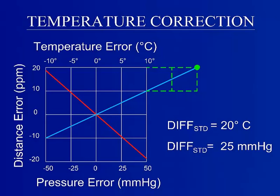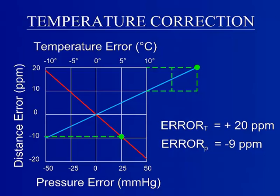Then determine the distance error due to pressure. Extrapolation is not required for this example. The resulting distance error due to pressure is negative 9 parts per million.